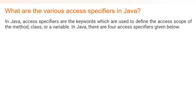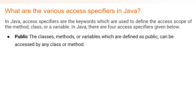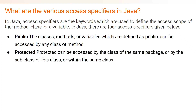In Java there are four access specifiers. The first one is public. Whenever you declare any method, class, or variable with the specifier public, then that class, method, or variable can be accessed by any class or method. We will see this in the demo — let's first understand the theory.